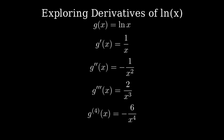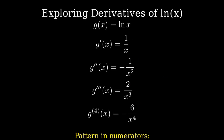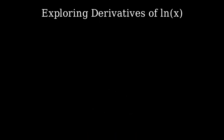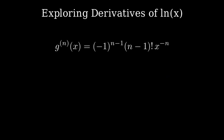Now here's where it gets interesting. Look at the numerators: 1, 1, 2, 6. That's 0 factorial, 1 factorial, 2 factorial, 3 factorial. This can't be a coincidence. There's a general pattern here. For the nth derivative of ln(x), we get (-1)^(n-1) times (n-1)! times x^(-n). This formula perfectly captures what we observed.